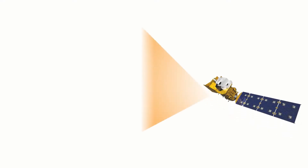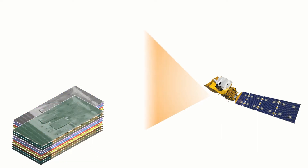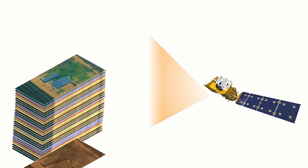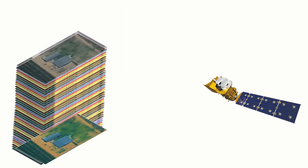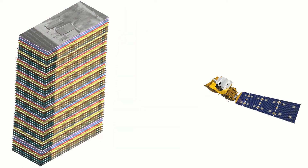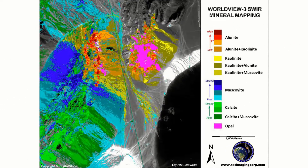Hyperspectral images, on the other hand, can consist of as many as 200 image layers. Such an image can provide sufficient detail for mineral exploration.